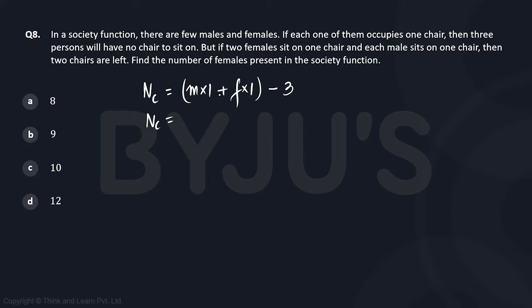Similarly, the same number of chairs is true if two females sit on one chair. Let's take an example: suppose there are 20 females. If two females sit on one chair, we would require only half the chairs for them, so it's going to be halved.